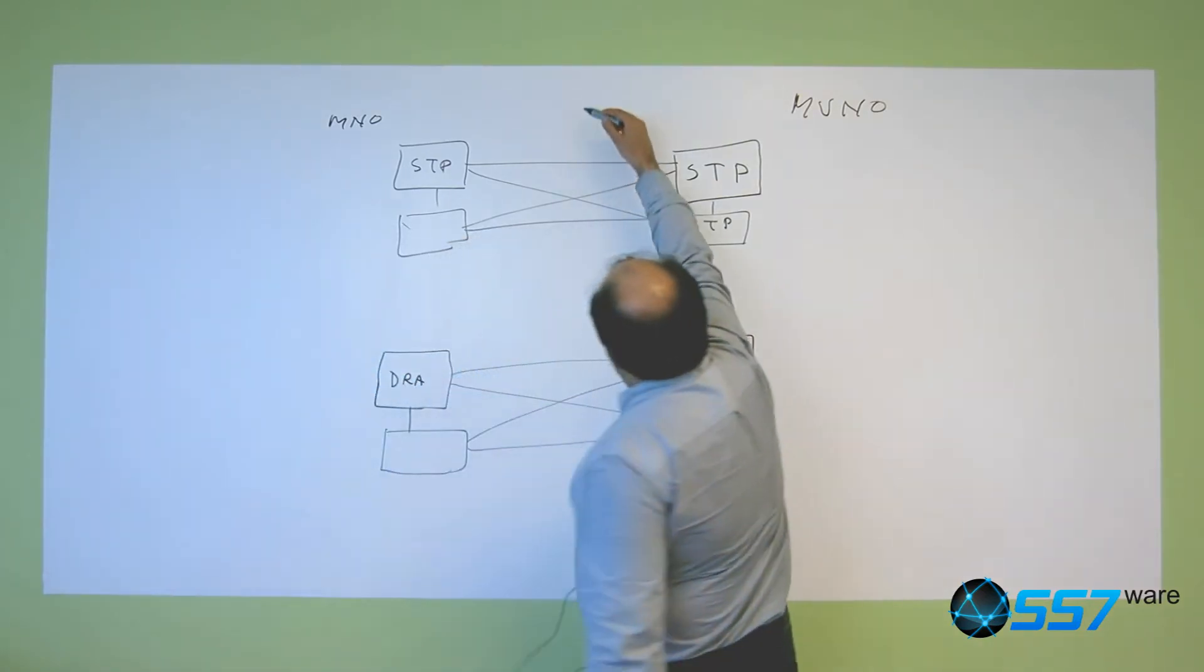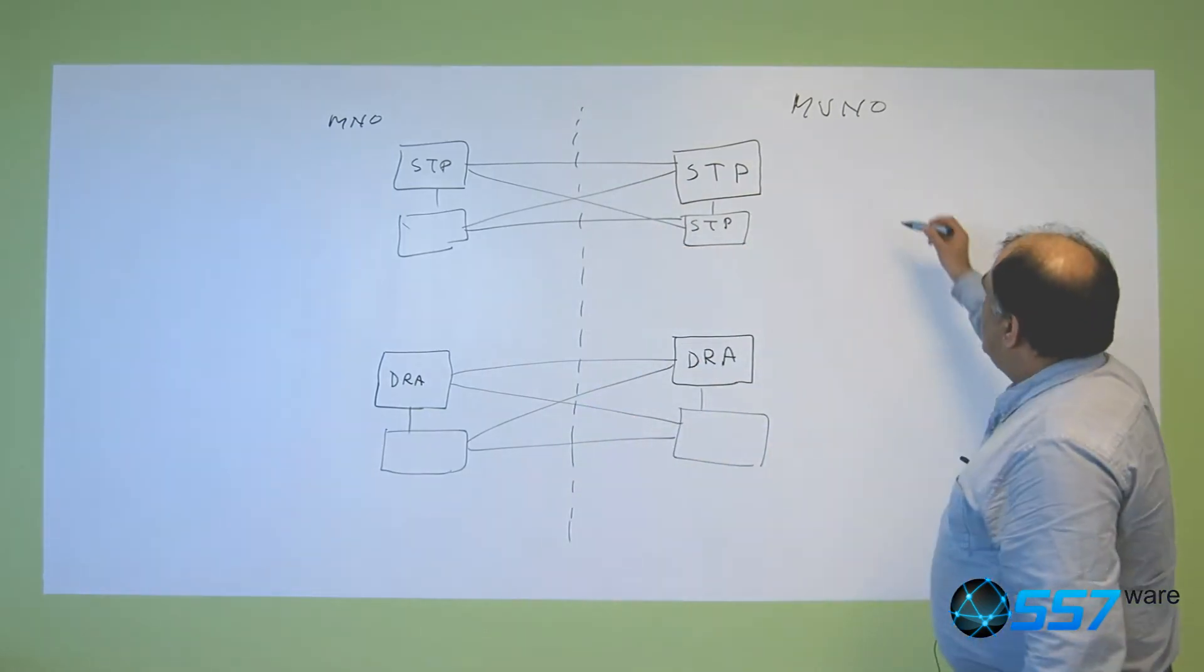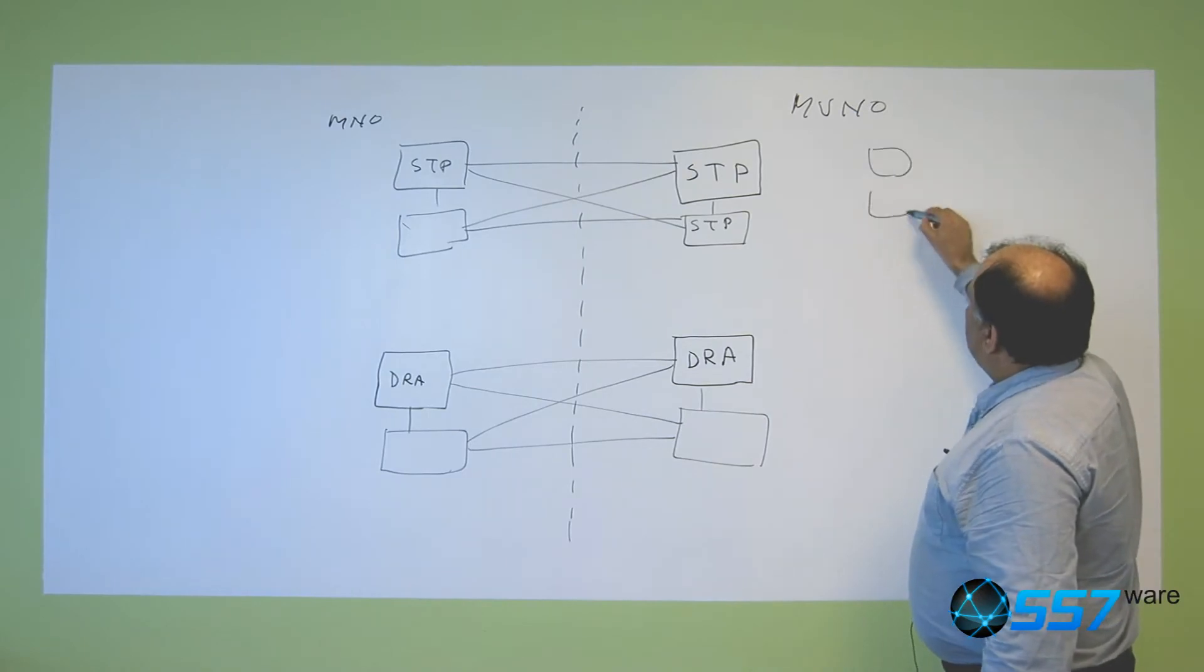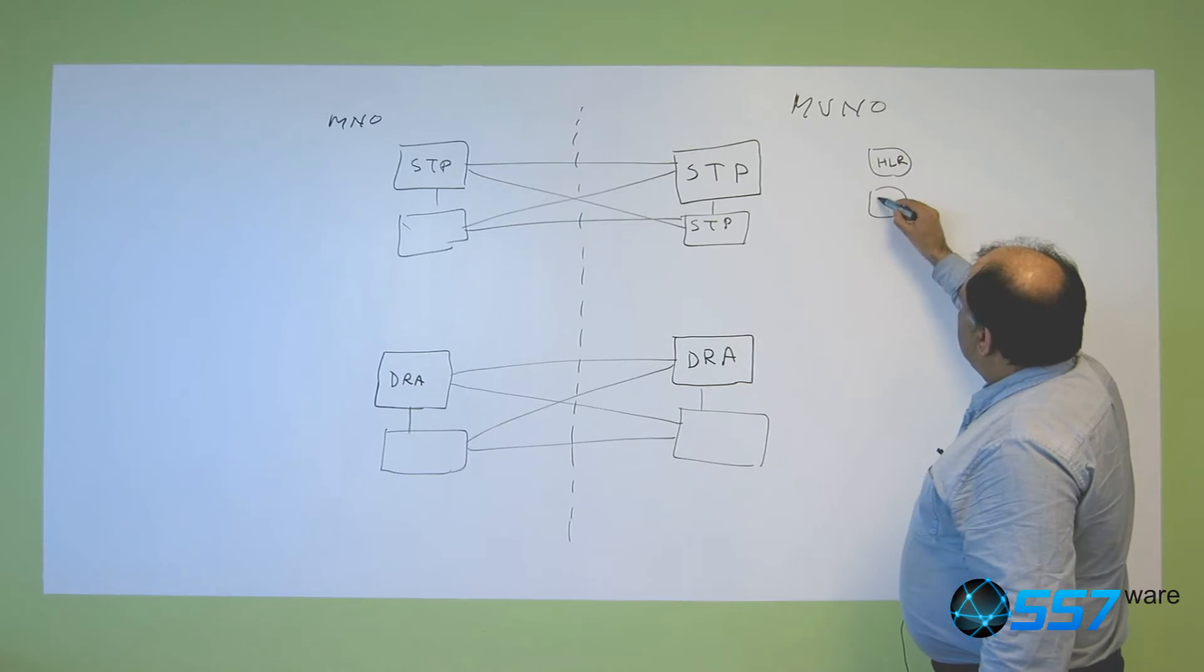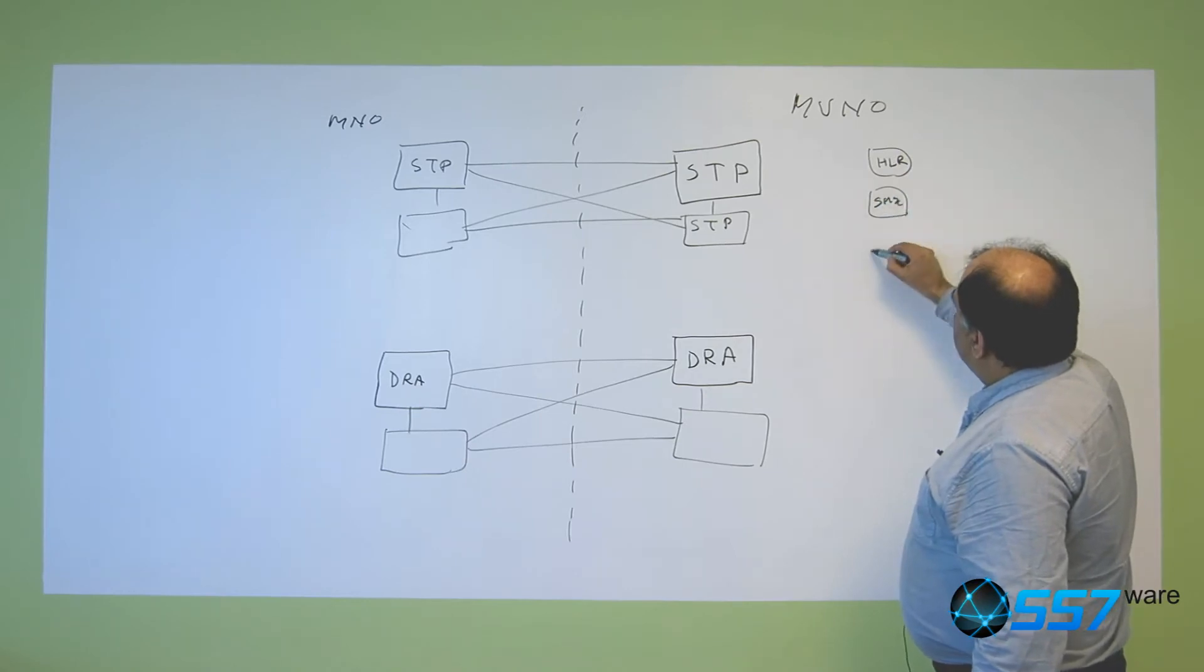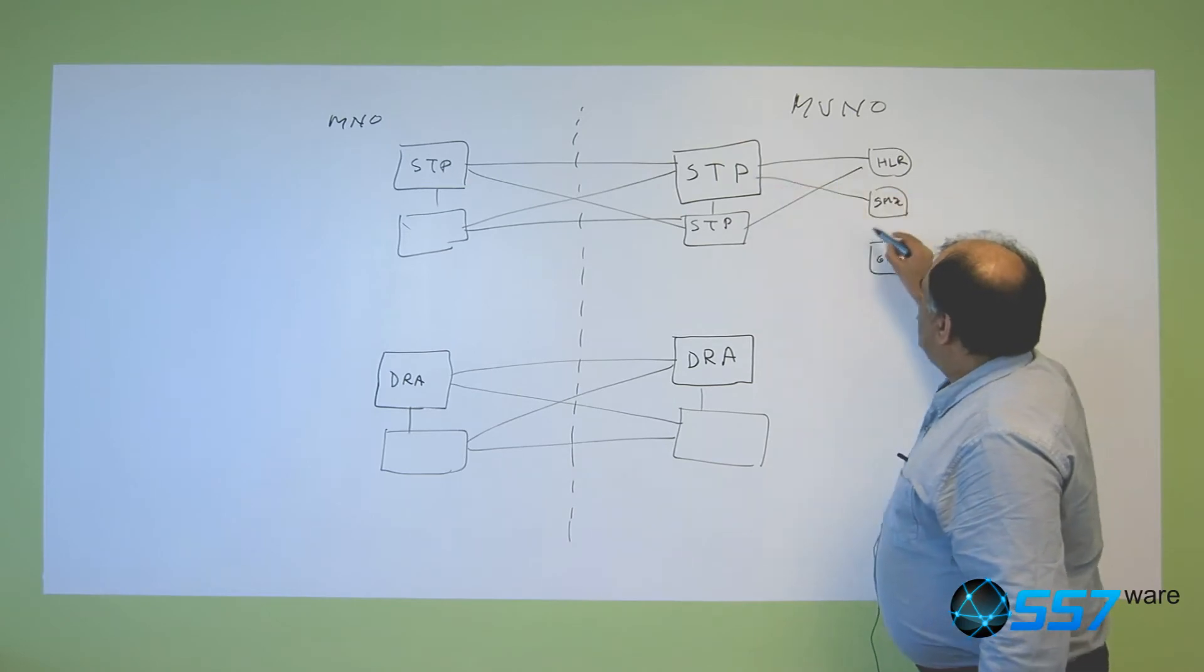This way there is an insulation between the networks. So here we can have all kinds of components that are connected to the routers here.